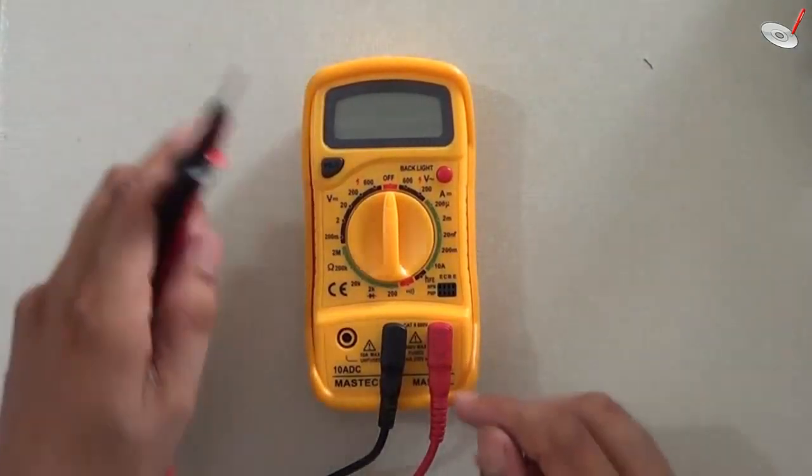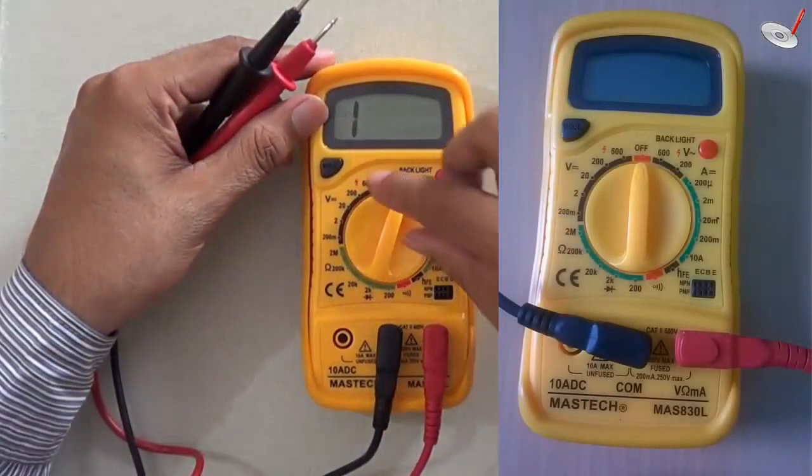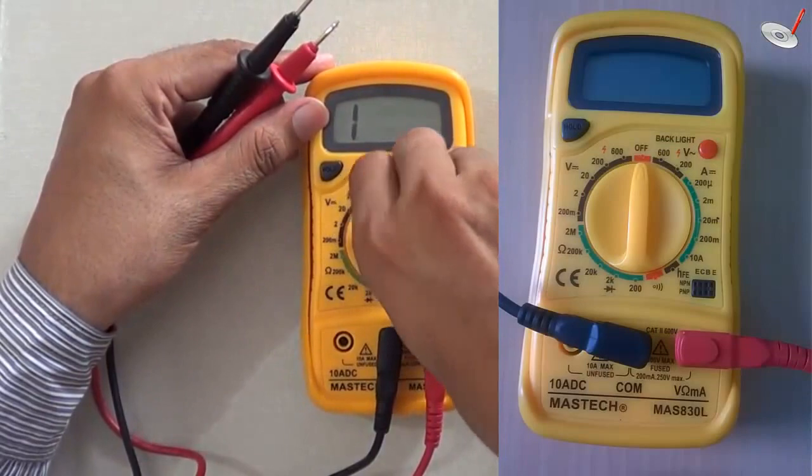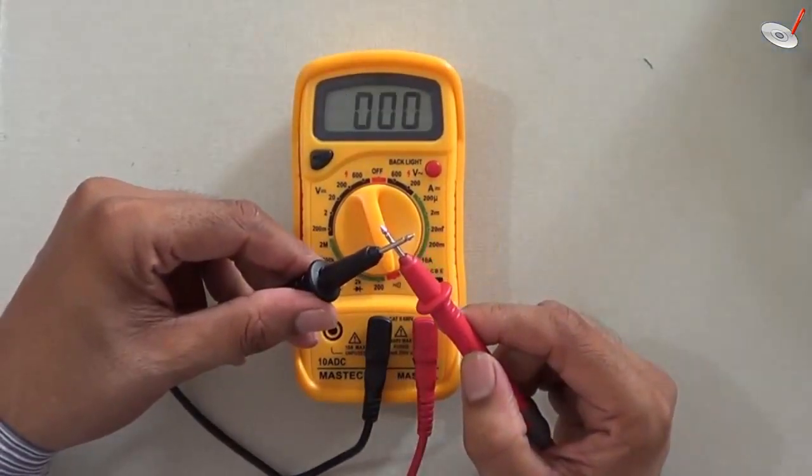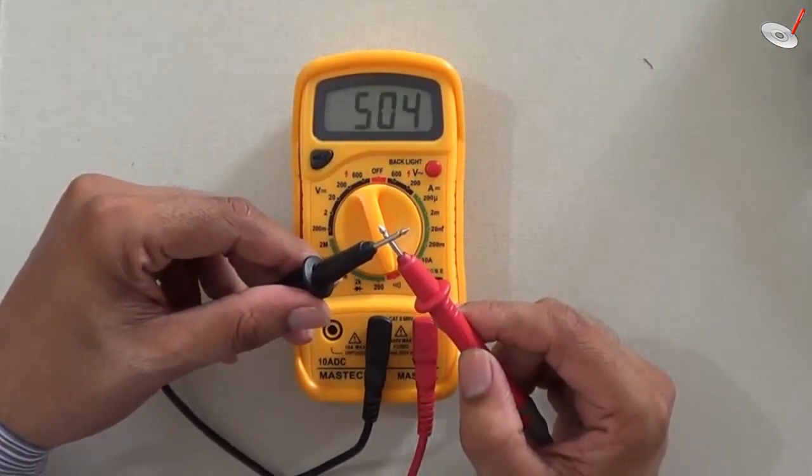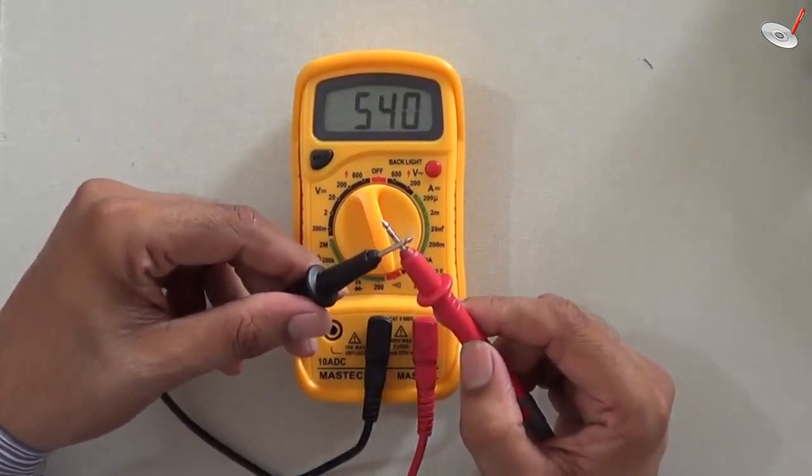For continuity test, I have to select this multimeter to the continuity test mode. This represents continuity test mode. If I connect these two probes then it will beep. It is beeping, so it is showing the continuity.